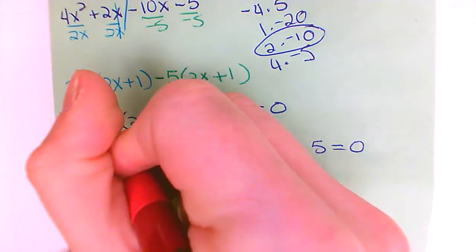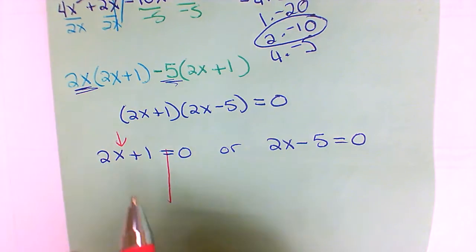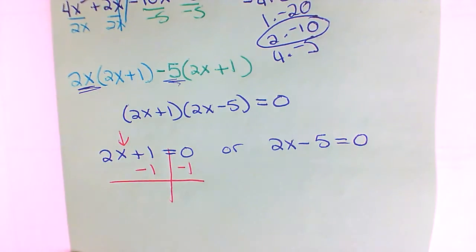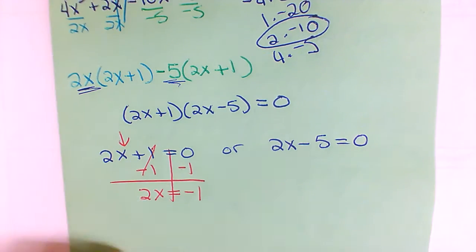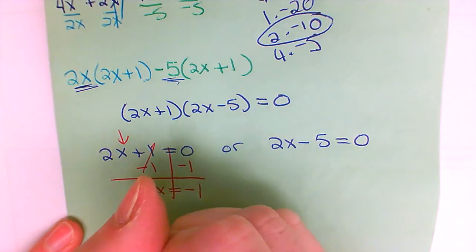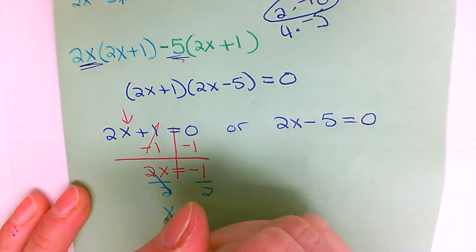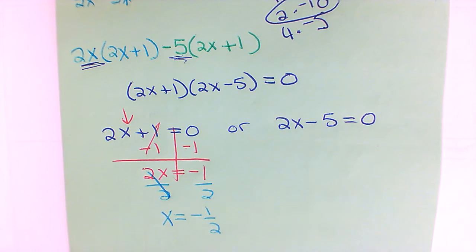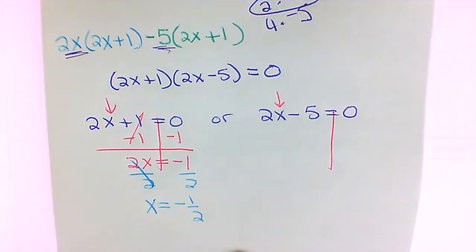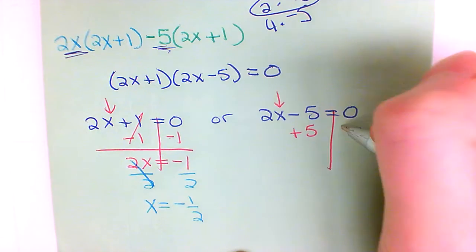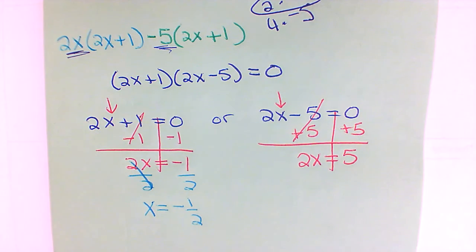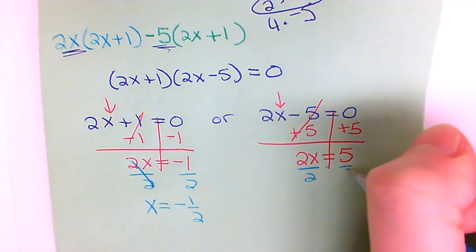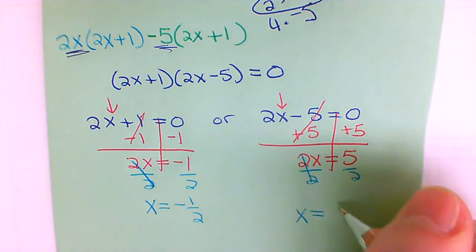I need to solve for x. To do the first one, I subtract the one first — I've got to get rid of the friend first. One minus one cancels out and leaves me with two x on the left. Zero minus one gives me negative one. The two is attached to x, so I divide both sides by two, which gives me x is equal to negative one half. On the other side, trying to get x by itself, I add five to each side of the equation — that cancels and gives me two x is equal to positive five. I divide both sides by two, and now I've got x is equal to five over two.